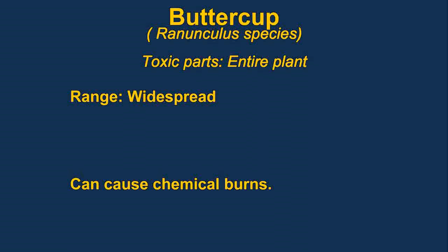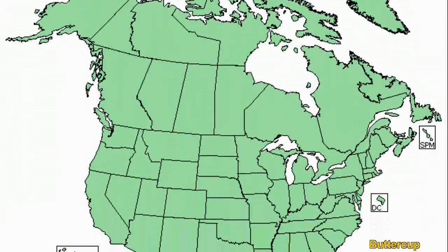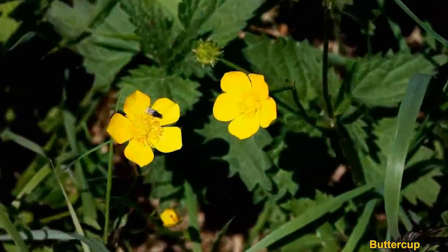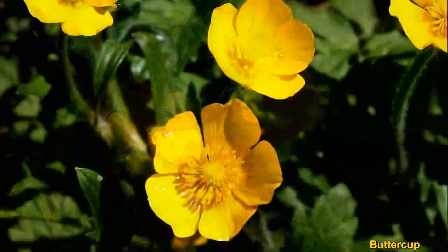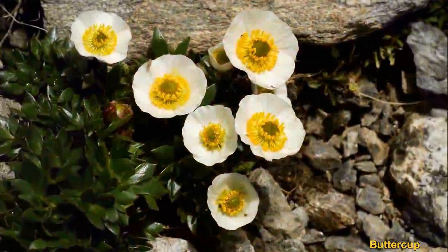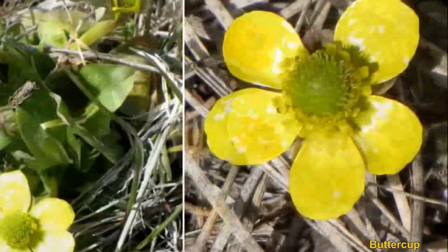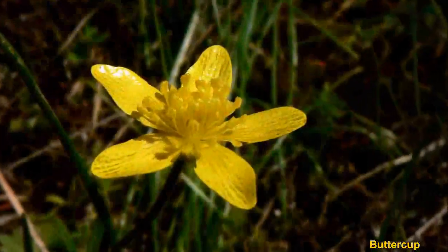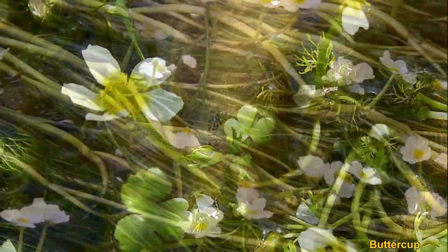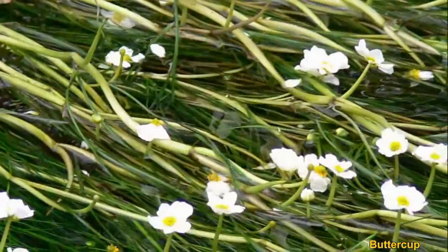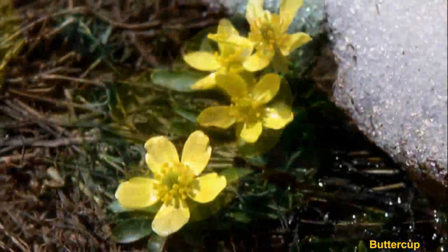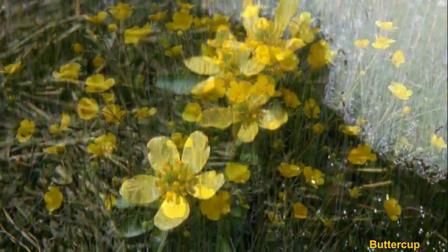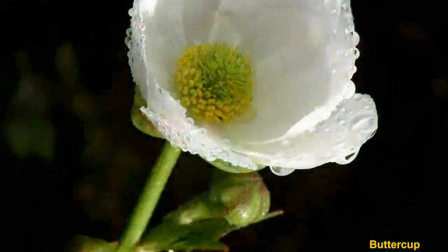Buttercups are a large family of flowering plants. They are usually small plants and sometimes aquatic. The toxins in the plant cause severe irritation, whether eaten or even just touched. Buttercups generally inhabit moist areas, and the toxin is released when the plant is crushed.